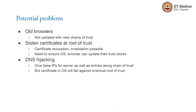There are potential problems. For example, the GTS Root might not be known to older browsers, because Google Trust Services itself was set up only a few years back. Older browsers — and I am talking about really old, more than 10 to 15 years old — might not even have been updated with new chains of trust. The worst case scenario is if someone steals a certificate at the root of trust, which means that somebody setting up a root of trust has to have very serious security to ensure that cannot happen. If it is stolen, it can cause all kinds of problems, because they can start issuing fake certificates that will be trusted by all browsers that trust this root of trust.